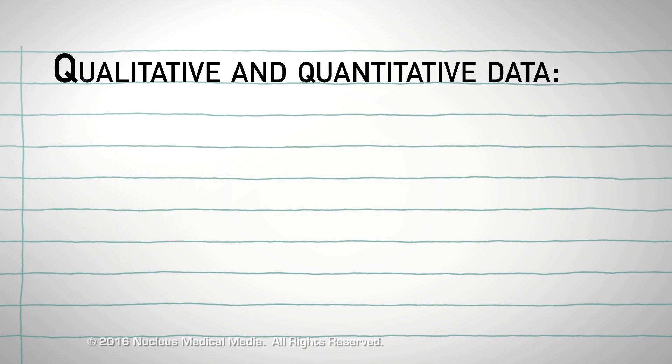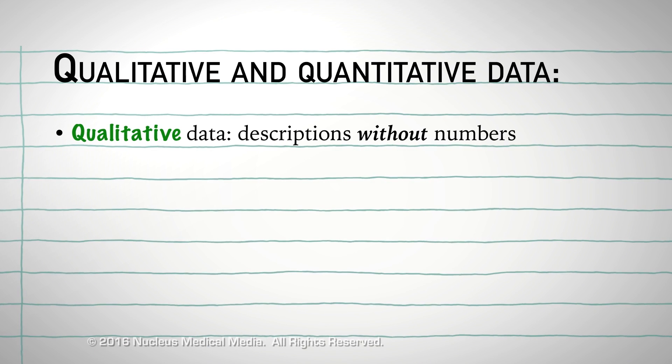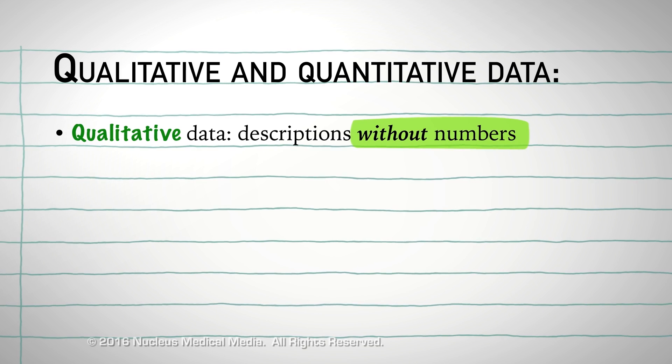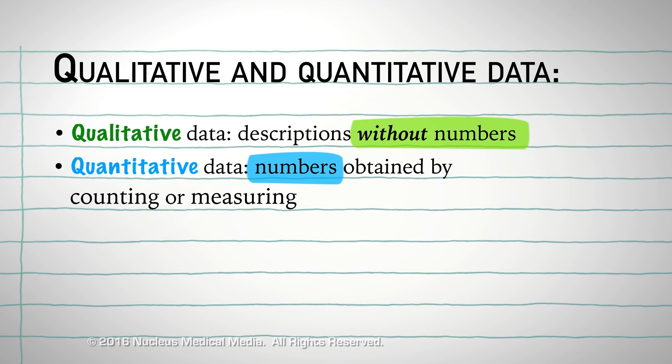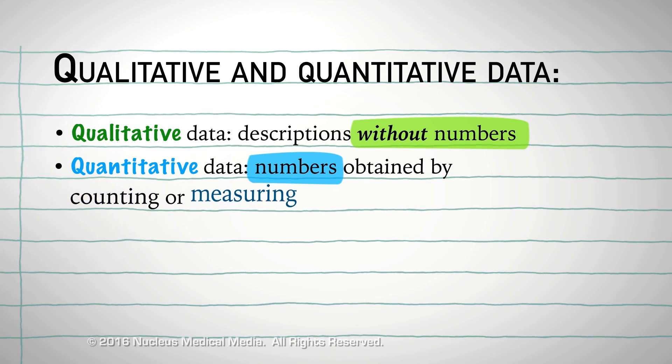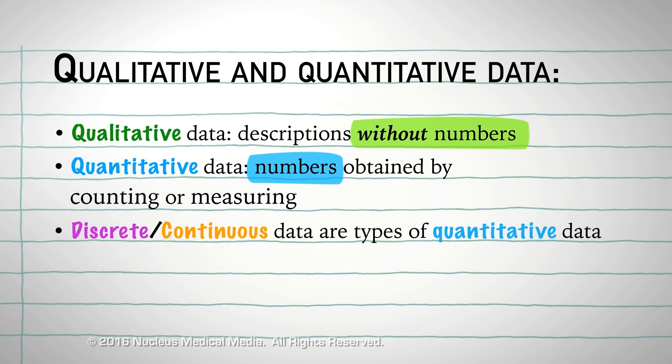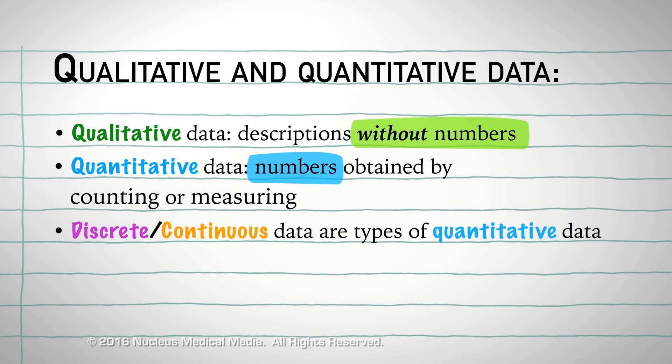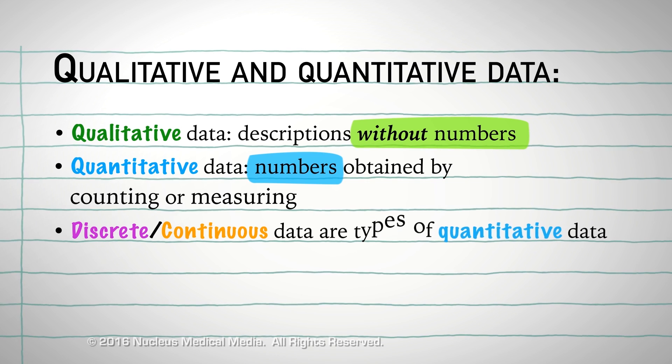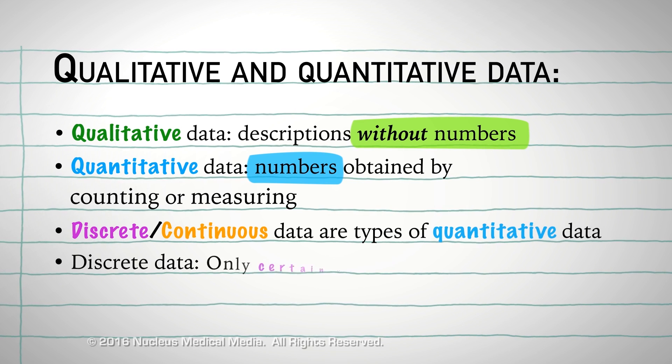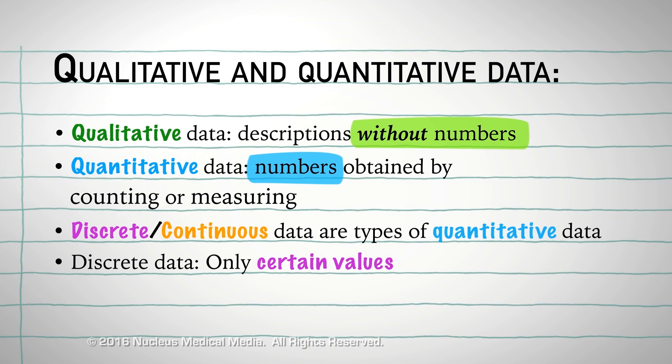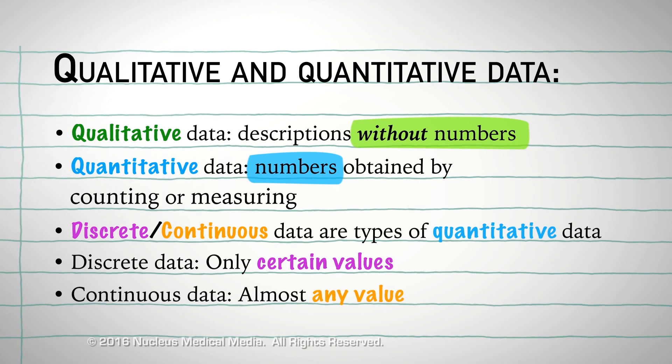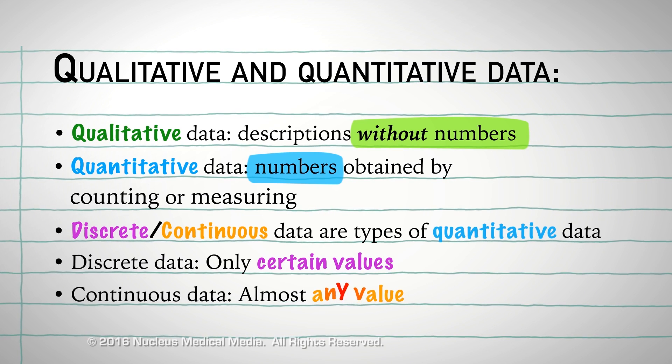In review, qualitative data contains descriptions that don't use numbers, while quantitative data contains numbers obtained by counting or measuring. Both discrete and continuous data are types of quantitative data. Discrete data can only contain certain specific values, while continuous data can have almost any value.